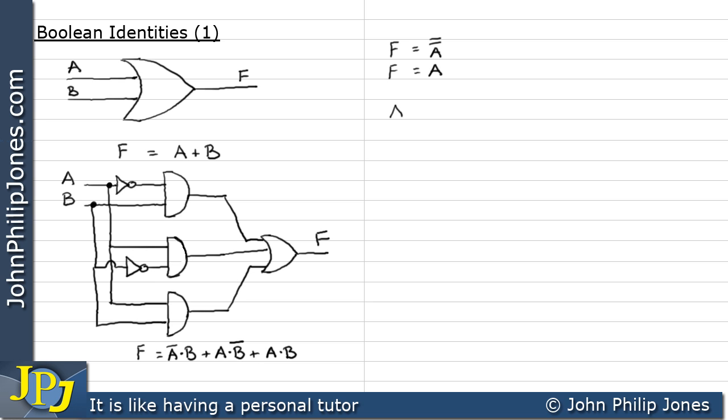Let's take A here and let's remind ourselves what kind of circuit gives us not not A. Well, the answer is it's going to be a not gate followed by another not gate where the output will be F at this position here.